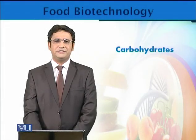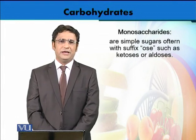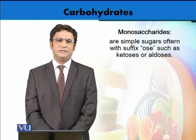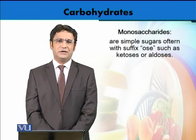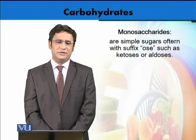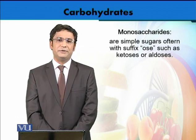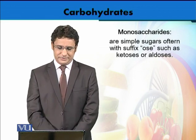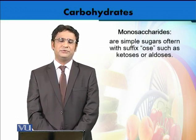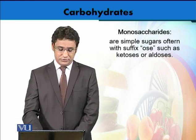Carbohydrates are an important compositional standard of food and they consist of monosaccharides, disaccharides, and polysaccharides. Monosaccharides are basically single units of sugars and they normally have a suffix '-ose' with them, like sucrose and maltose. So whenever we have this suffix '-ose', that means we are talking about a monosaccharide.